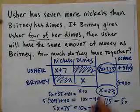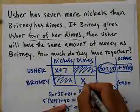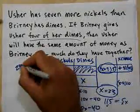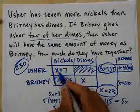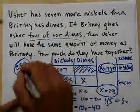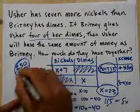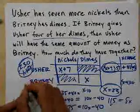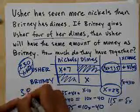So X is 23. So 23 dimes she originally had. So that's $2.30. And 23 and 7 is 30 nickels. 30 nickels at 5 cents apiece is $1.50. And together they did all this trading. They only had $3.80. All right.